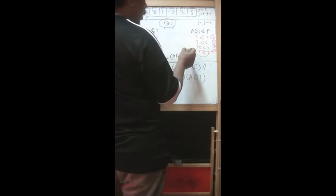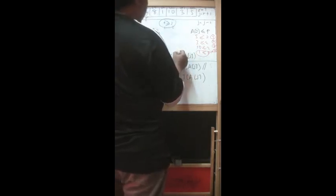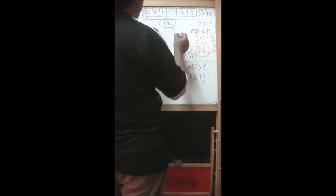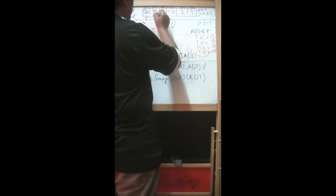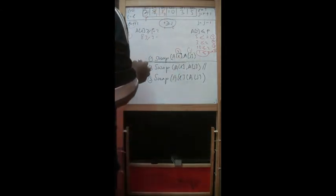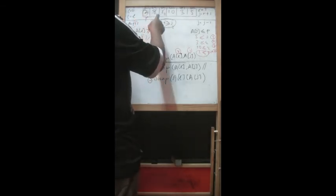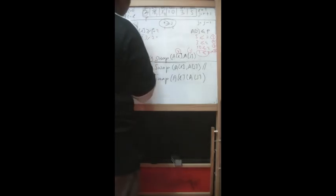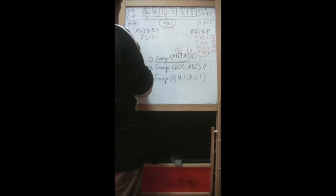Now we do the first swap: swap A[I] and A[J]. I is 1 so A[1] is 8, and J is 2 so A[2] is 1. We swap 8 and 1. The updated list is now: 2, 1, 8, 10, 3, 5.